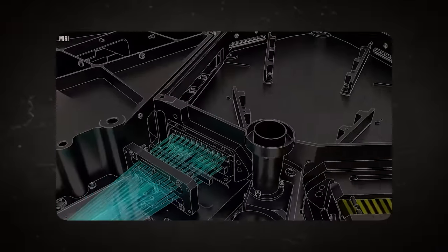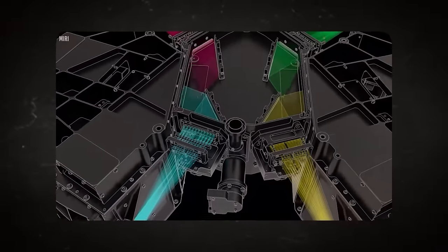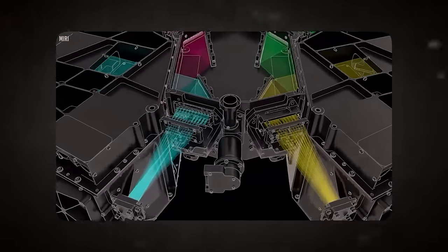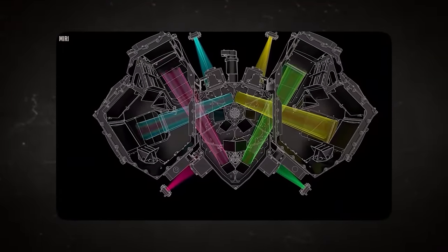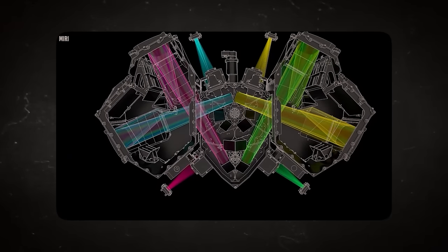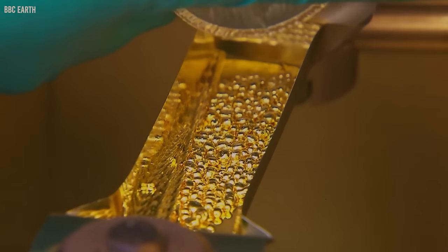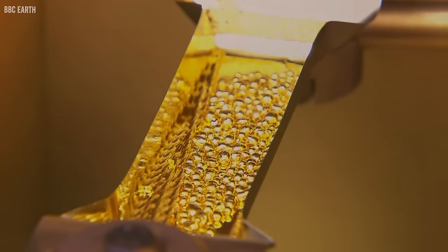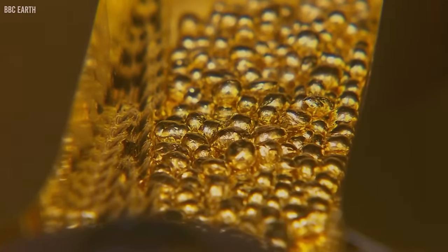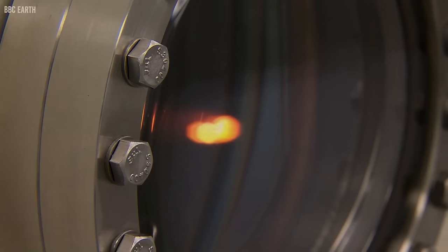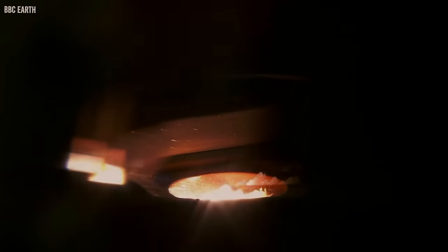The James Webb Space Telescope possesses an array of groundbreaking features elevating its observational prowess to unprecedented heights. Its principal mirror, comprising 18 hexagonal segments coated with gold-coated beryllium, spans an impressive 6.5 meters in diameter. This mirror enables the telescope to capture and analyze faint light from distant cosmic entities with unrivaled precision.